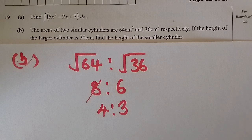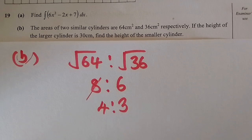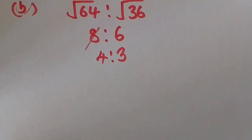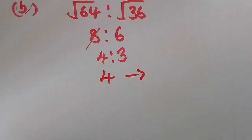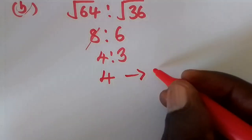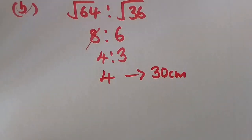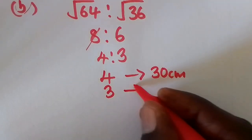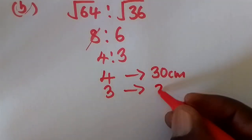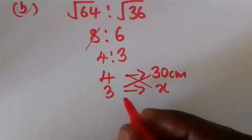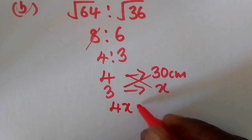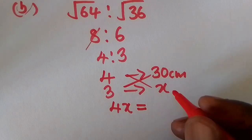Working with the ratio, we set up the proportion: 4 (ratio for the bigger cylinder) equals 30 centimeters (its height), and 3 (ratio for the smaller cylinder) equals x, the height of the smaller cylinder we are calculating. We then cross multiply, giving 4x equals 3 times 30.